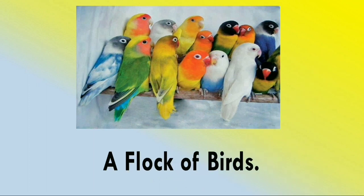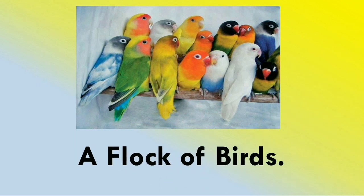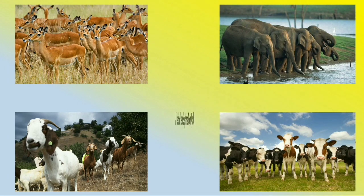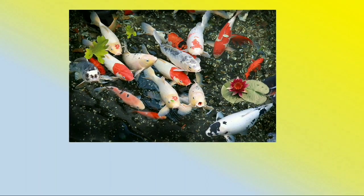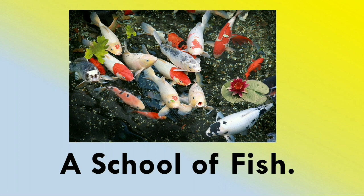What do you find here? Yes, a group of birds. To refer to a group of birds we have the collective noun 'flock' — a flock of birds. Now what do you see? A group of deer, cattle, goats, elephants. To refer to a group of deer, cattle, goats, or elephants, we have the collective noun 'herd'. A school of fish.